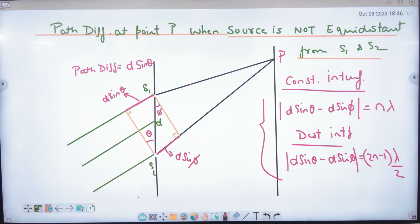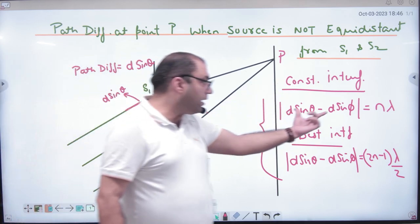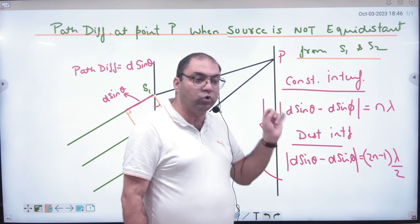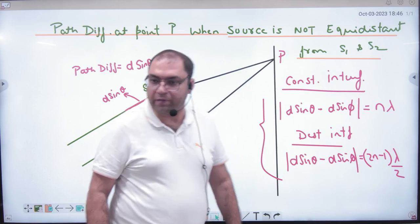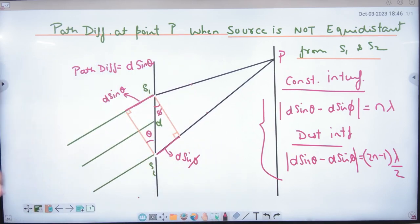And if we talk about phase difference, then what will we do? Path difference, multiply it 2 pi by lambda into this, so what will go? Phase difference, 2n pi. If it comes to the paper, phase difference condition.